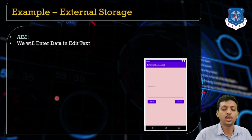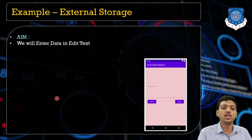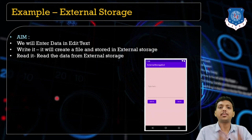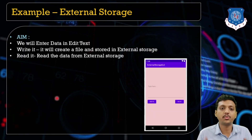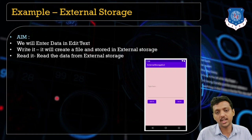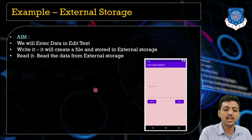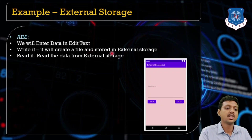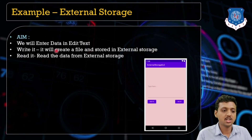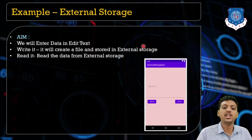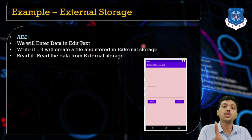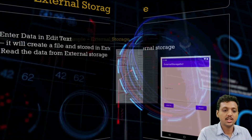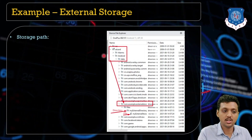In this practical session we are going to add data in an EditText — the same example as internal storage, except now it's external storage. We are going to store data in an external storage file. We have an EditText, a Write button, and a Read button. We enter data in the EditText, it creates a file and stores it in external storage inside a folder. We also create a folder and read the data back from external storage.